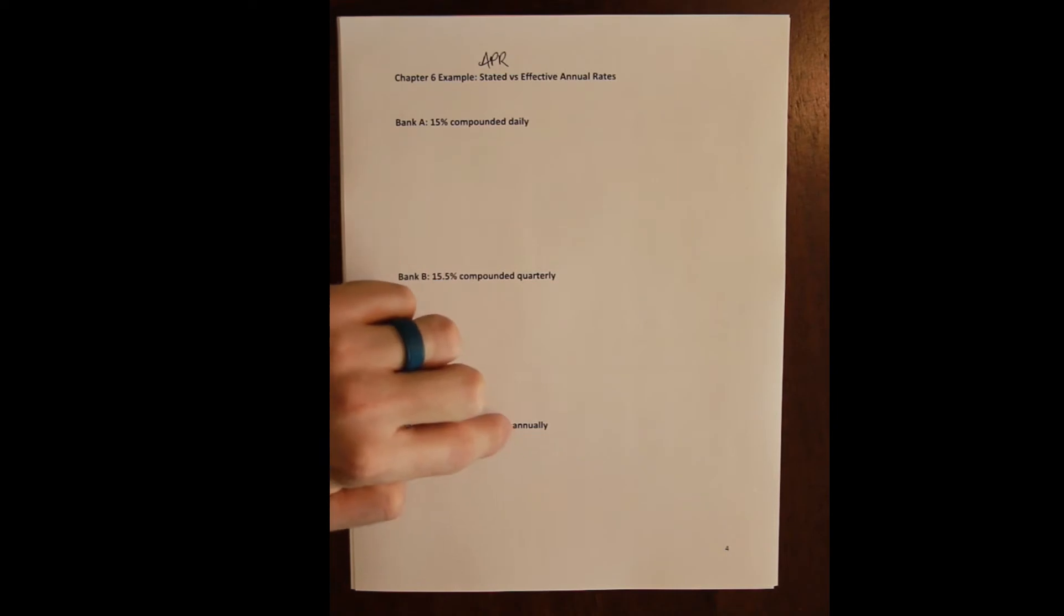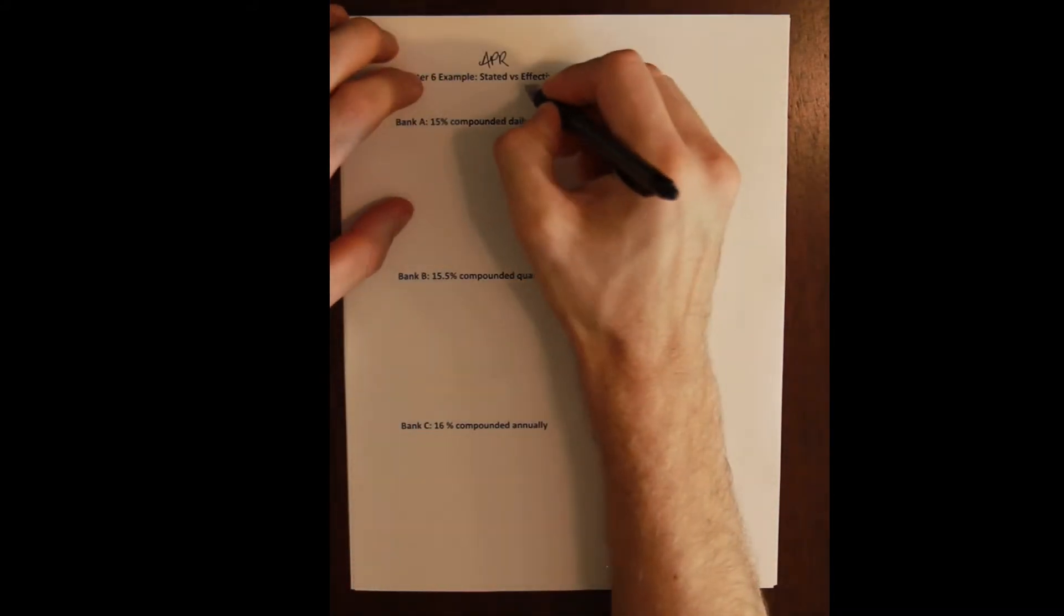We don't know that Bank A is the lowest rate because daily compounding means we'll pay more interest effectively than annual compounding. Now is it more than 16% compounded annually? We don't know. That's what the effective annual rate is designed to give us the ability to do—it will give us a rate that is comparable despite all these different compounding periods.